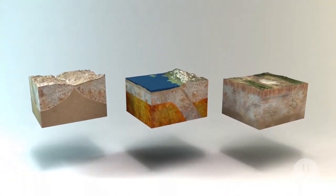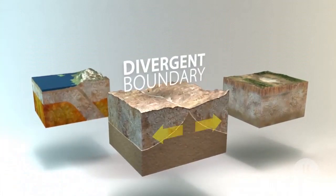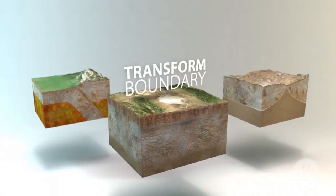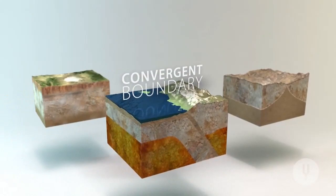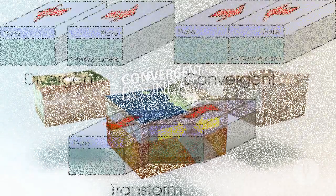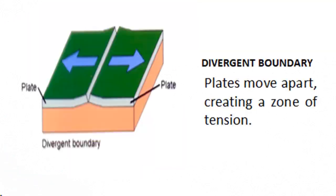The relative movements of plates create three types of plate boundaries: divergent boundary, transform boundary, and convergent boundary. Let us discuss these three distinct types of plate boundaries, which are differentiated by the type of movement they exhibit. The first type is termed divergent boundary, wherein plates move apart, creating a zone of tension.